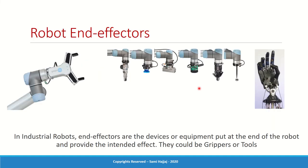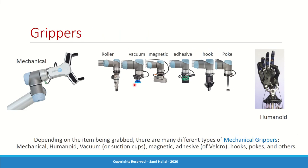Now the second part: end effectors. The end effector is the device placed at the end of the robot to provide the desired effect. This could be a mechanical gripper or a tool that performs a job. When it comes to grippers, there are many different types. A mechanical gripper is basically a clamp that opens and closes to hold the object. We could also have a humanoid gripper which mimics the human hand, a roller gripper, a vacuum or suction cup gripper, magnetic gripper, adhesive or velcro grippers, hook gripper, and even a poke gripper which uses a needle to pick up items.